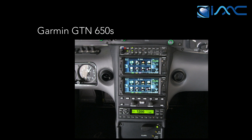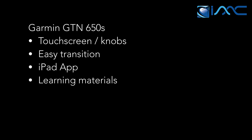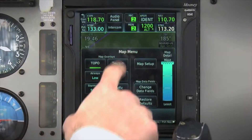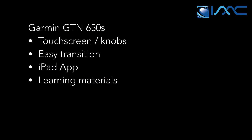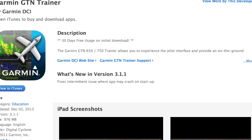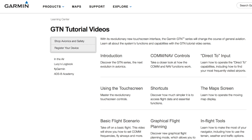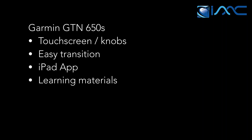The Garmin GTN 650s have the new touchscreens, but they still keep the knobs and a couple of buttons, and you can get most things done with either one. It was a very easy transition. We knew the 430 series, so we were comfortable there. When we downloaded the iPad app and simulator, and combined that with the learning materials on the web, once we got in the airplane with these things, it was a non-event.